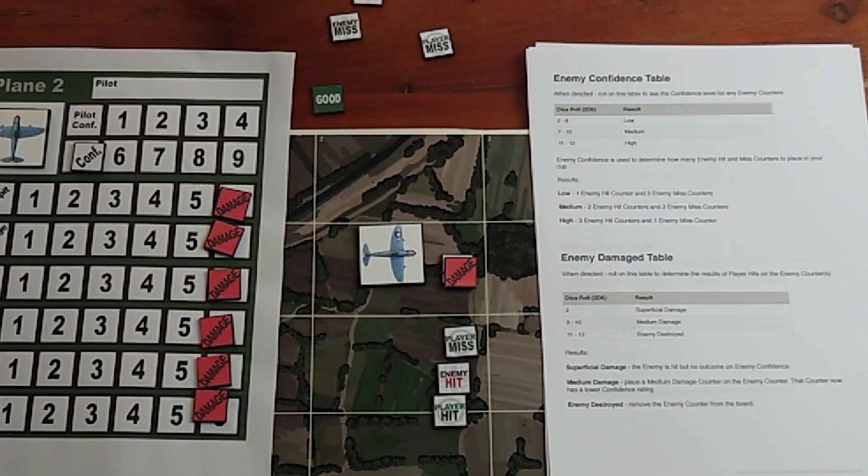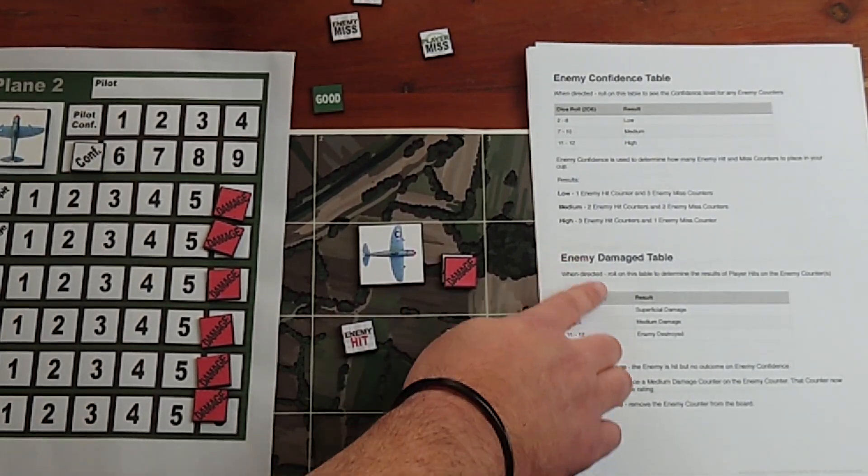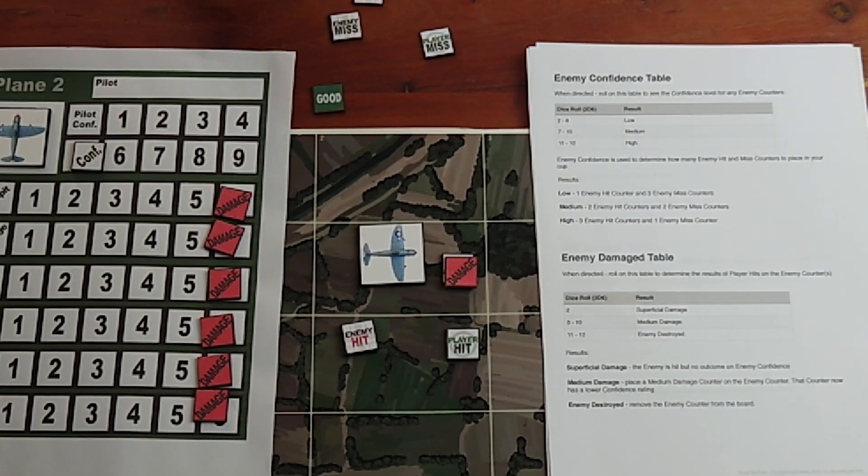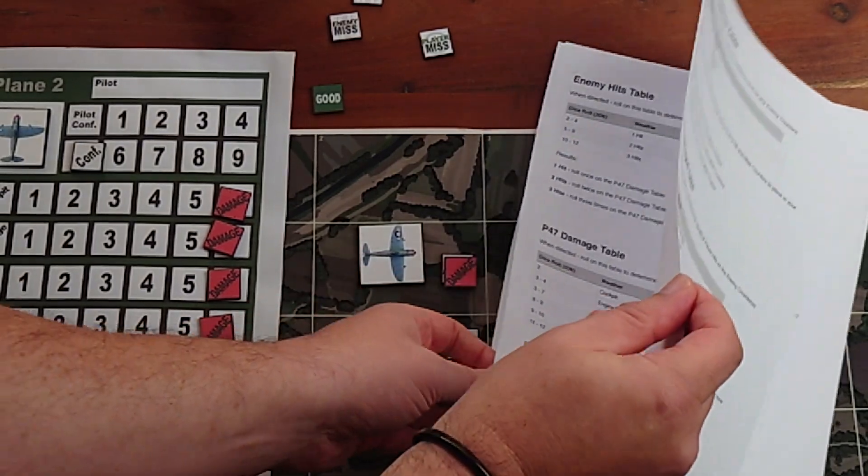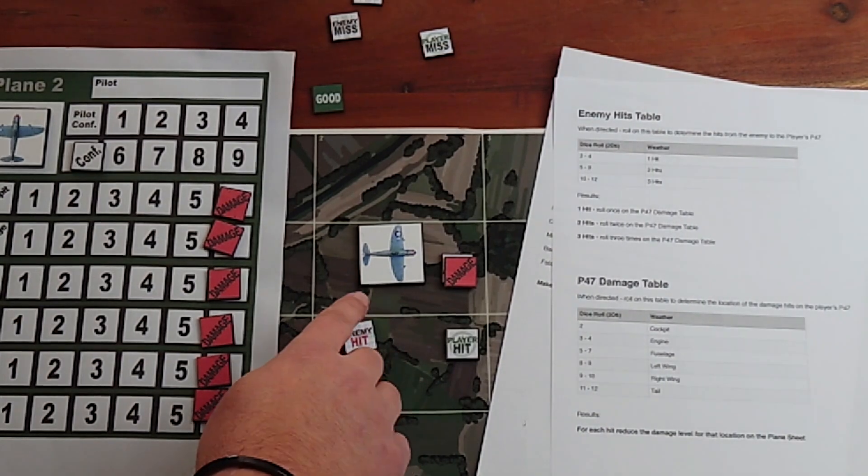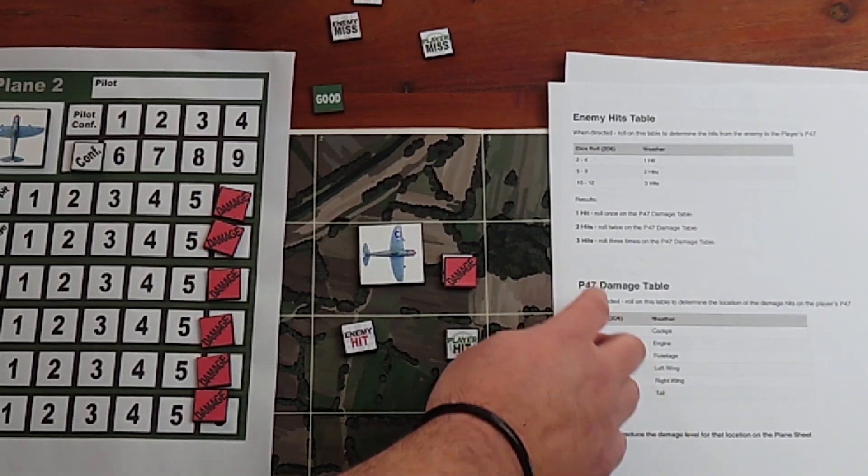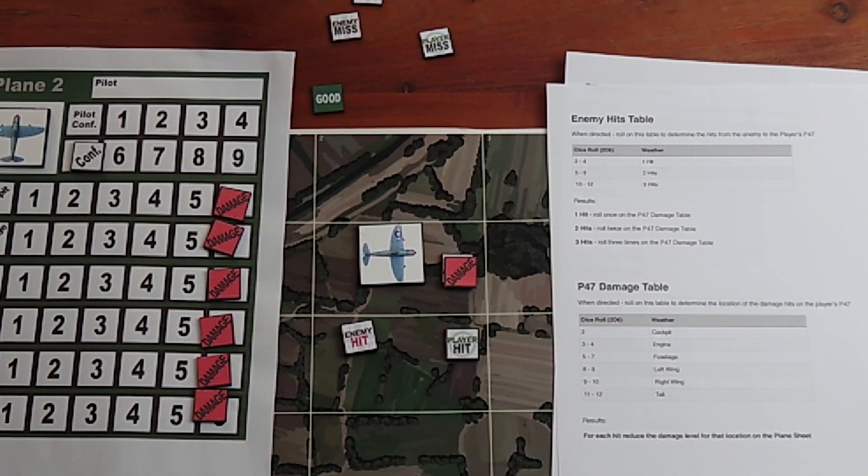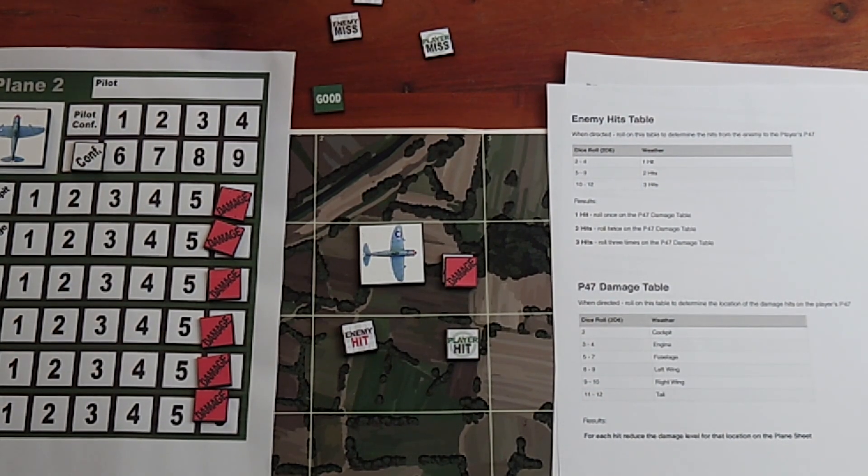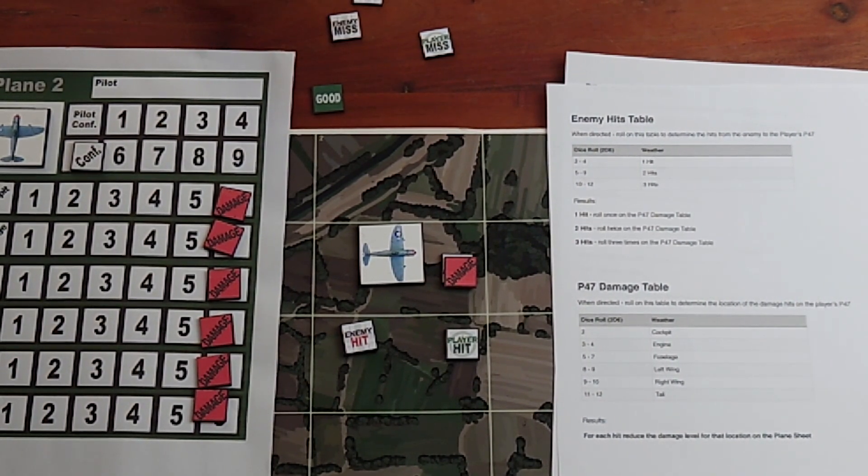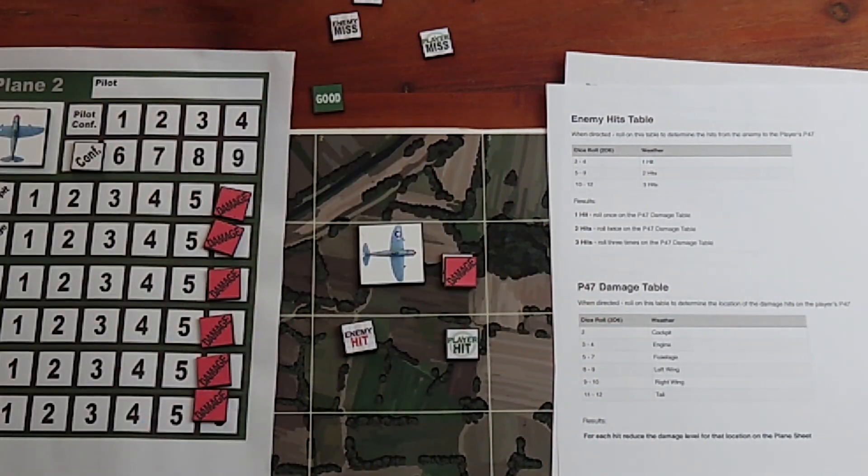Let's run with the player hit for a second. Player hit: I refer to the enemy damage table, I roll on that to see what happens to the enemy. Now the enemy did hit me in this example. To resolve that, we refer to the enemy hits table. The enemy has hit the P-47 and we would roll to see how many hits it has incurred: one, two, or three hits.